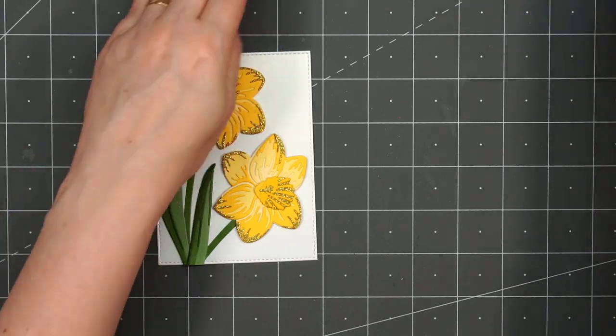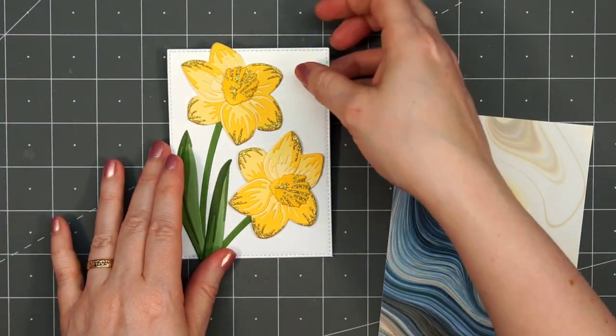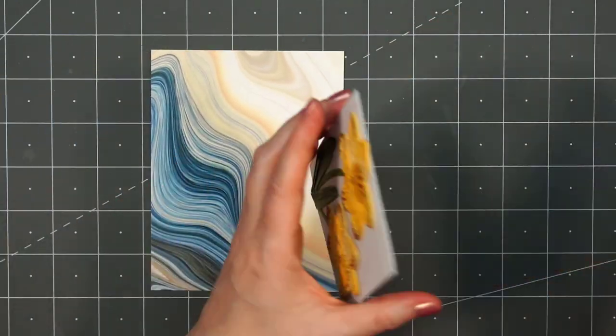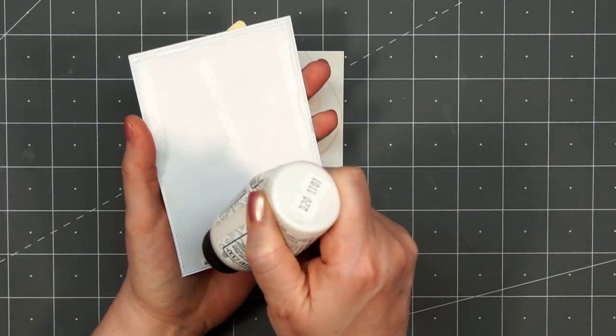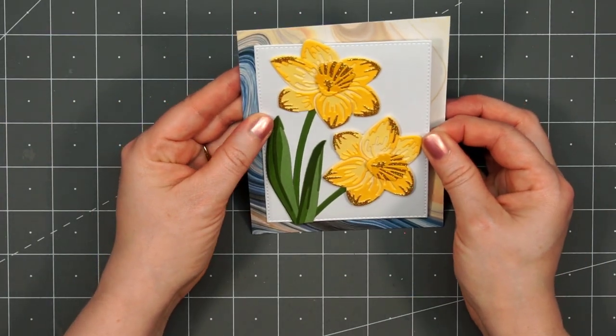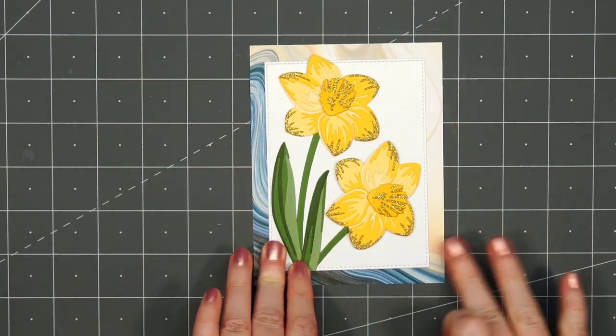Now it's time to adhere this panel onto that pattern paper. I will be covering up most of the center of that pattern paper, but you'll still see about half an inch around the edge. I'm putting some ATG and also some liquid adhesive on the back, mostly liquid adhesive along that outside edge where that stitch detail is.